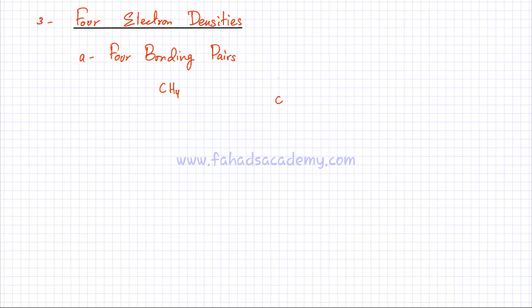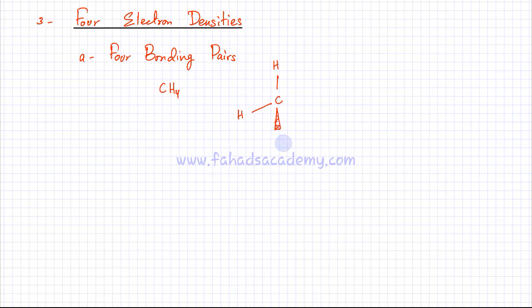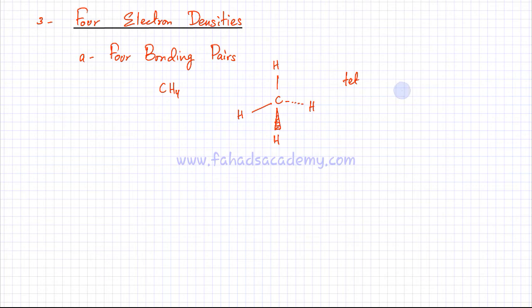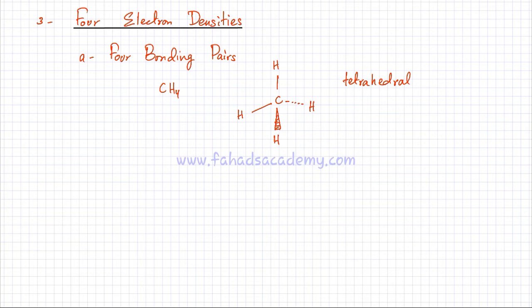So there's one hydrogen here, another hydrogen there, a bond coming out of the page shown as a wedge-shaped bond, and then a bond going into the page. This is called a tetrahedral shape, and all the angles in this molecule are 109.5 degrees.